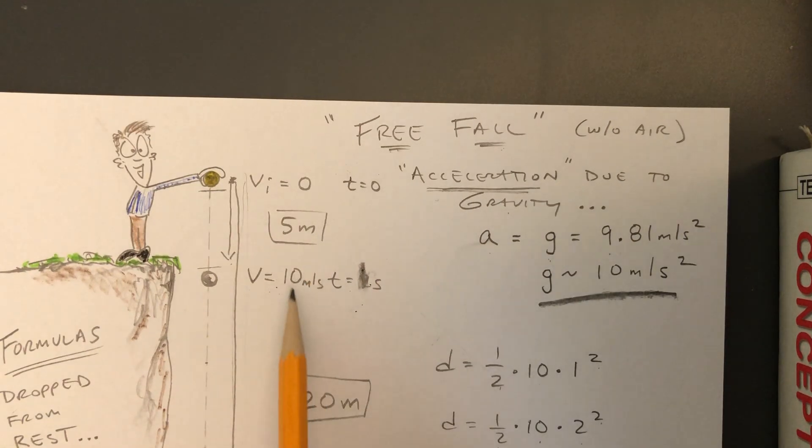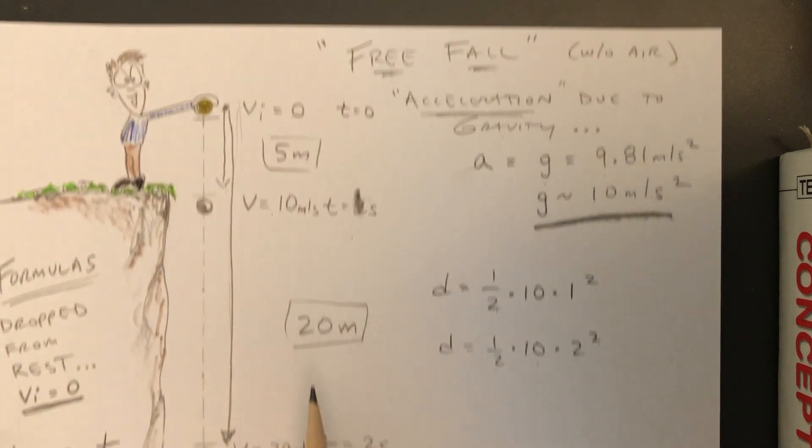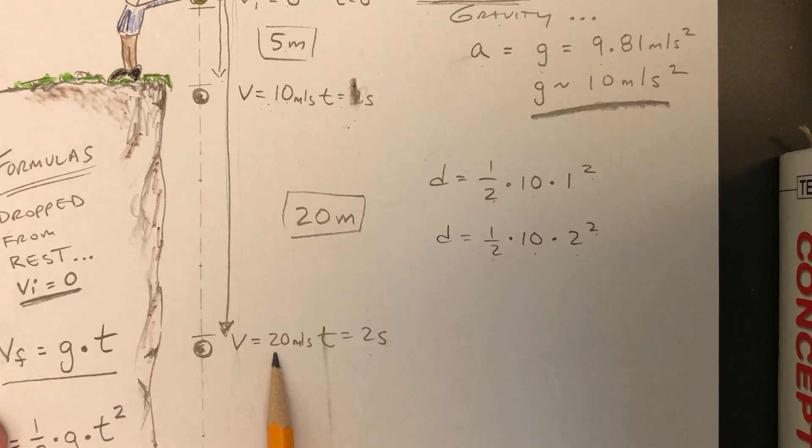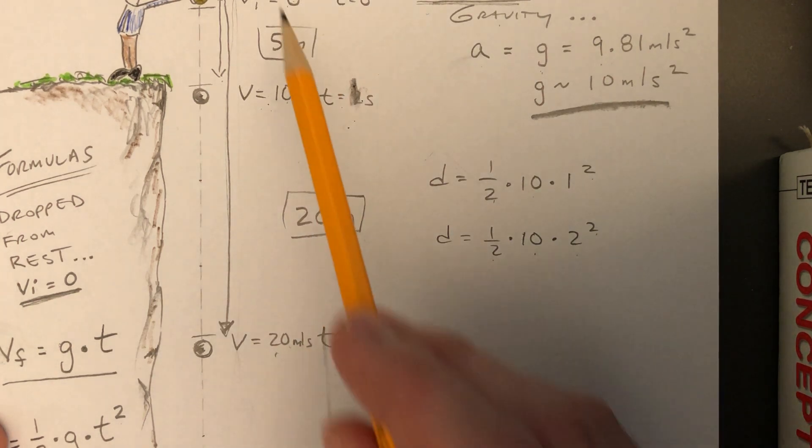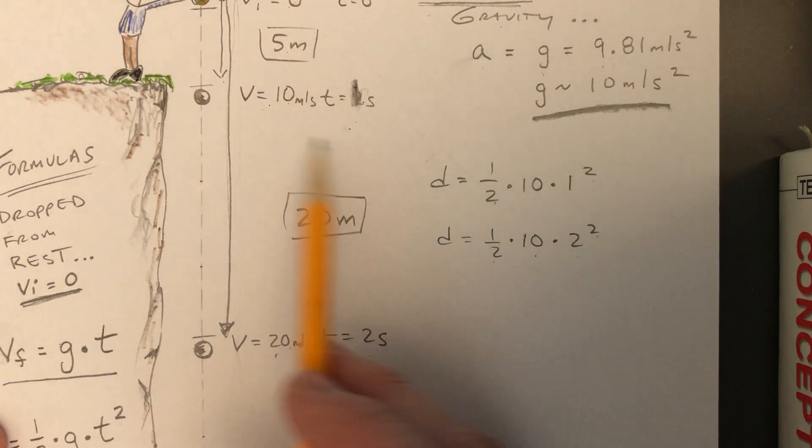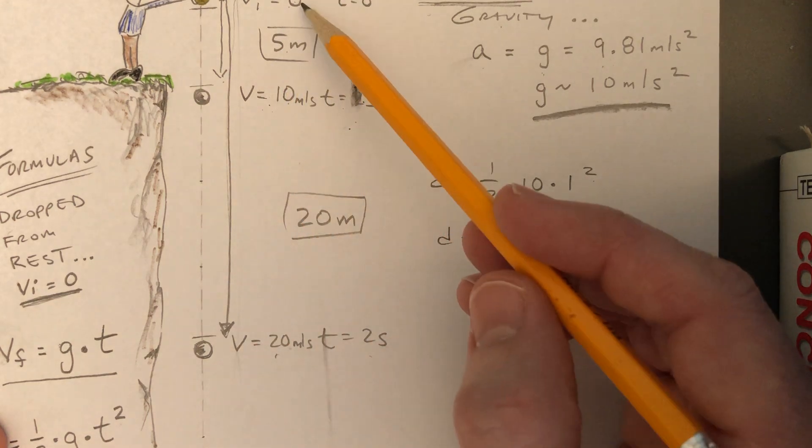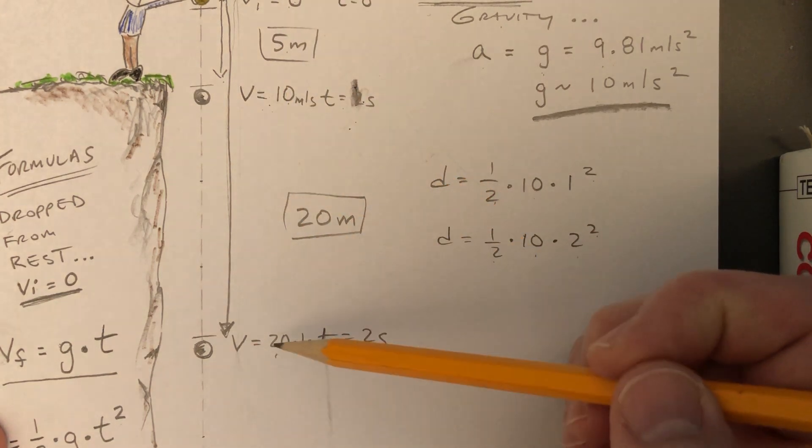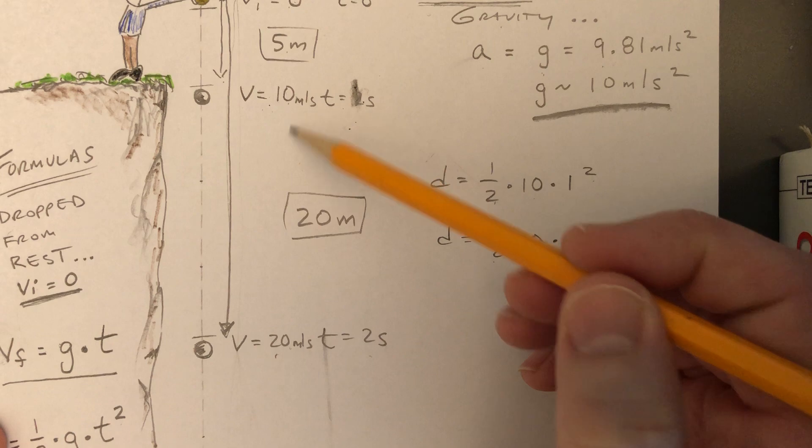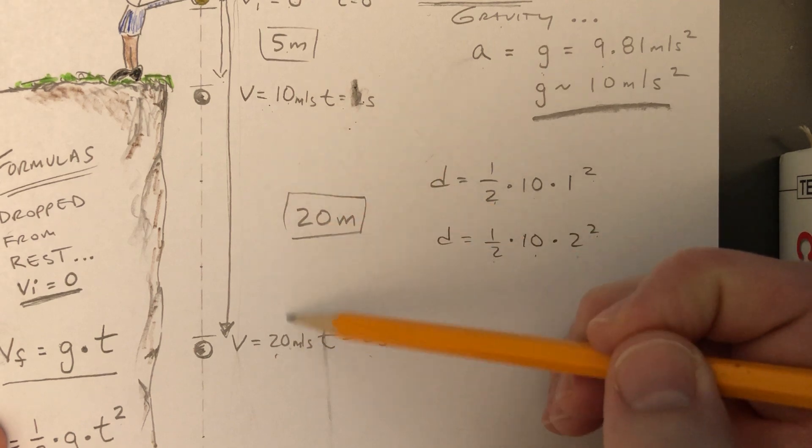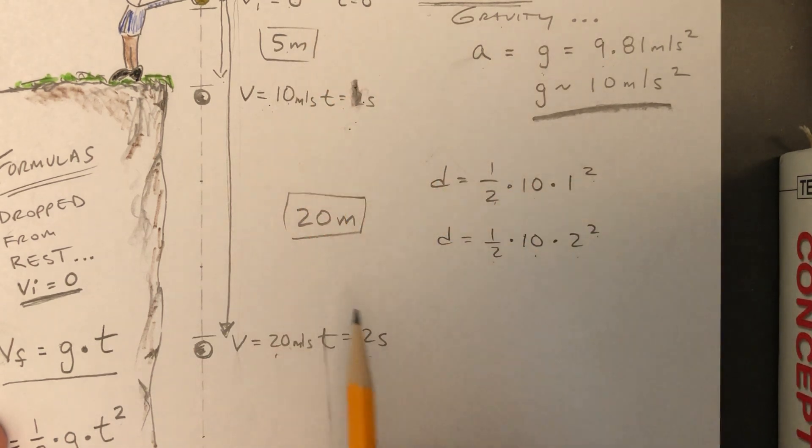Think about it. On average, going from zero to ten, on average, it would move five meters. Going from zero to twenty meters per second, on average, that would be ten. So if you think about it, between ten and twenty, the average is fifteen. And fifteen plus five would be twenty.